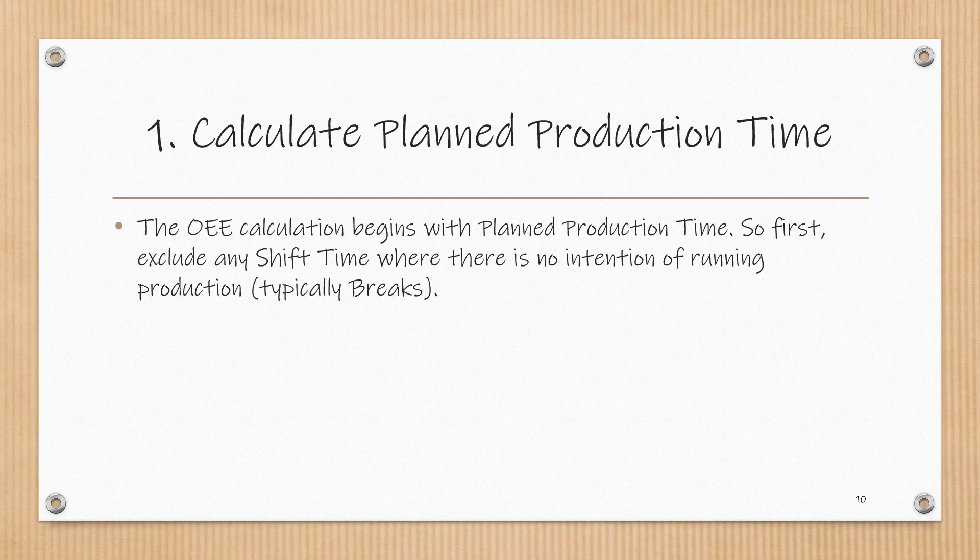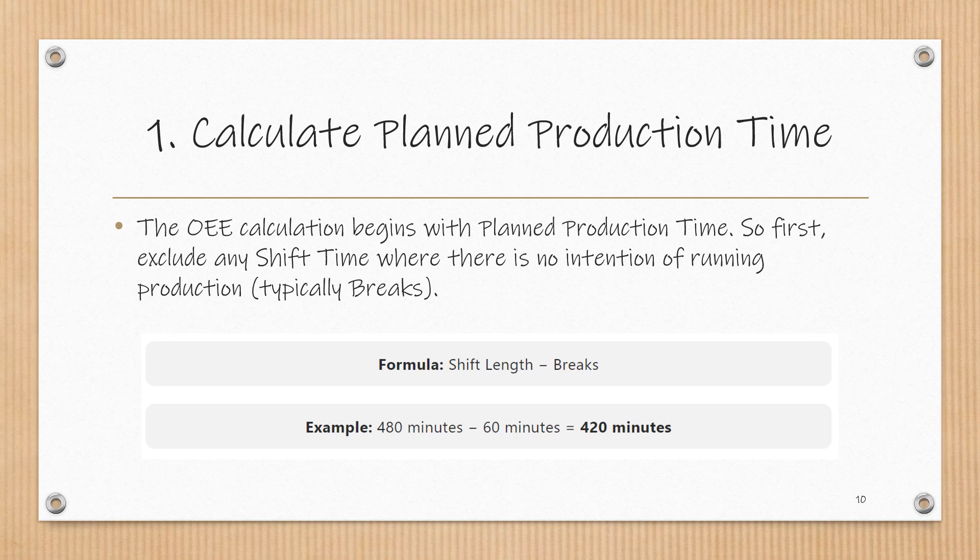The OEE calculation begins with planned production time. First, exclude any shift time where there is no intention of running production, typically breaks. The formula is shift length minus breaks. In our example, 480 minutes of shift length minus 60 minutes of breaks results in a planned production time of 420 minutes.